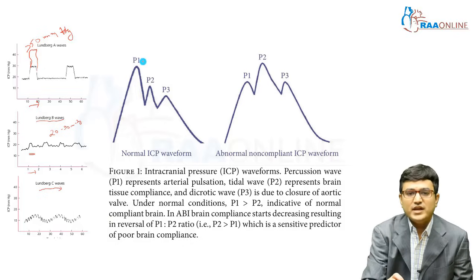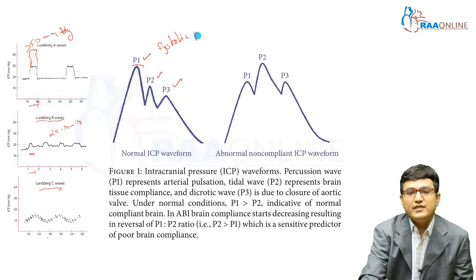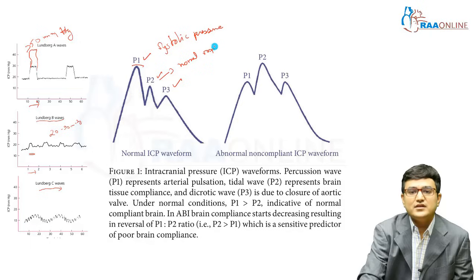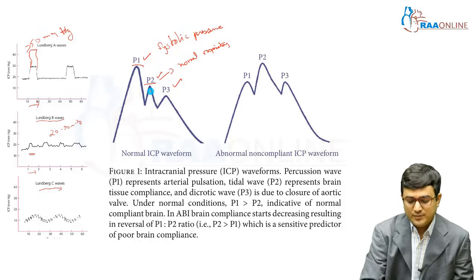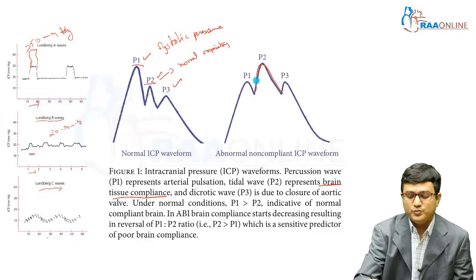On a normal ICP waveform there are three notches: P1, P2, and P3. P1 represents the arterial pulsation or systolic pressure. P2 represents what happens during the normal respiratory cycle — there is a variation in ICP waveforms due to the respiratory cycle, and P2 also reflects brain tissue compliance. In traumatic brain injury, when brain tissue compliance reduces, the waveform becomes abnormal and P2 rises higher than P1 and P3.